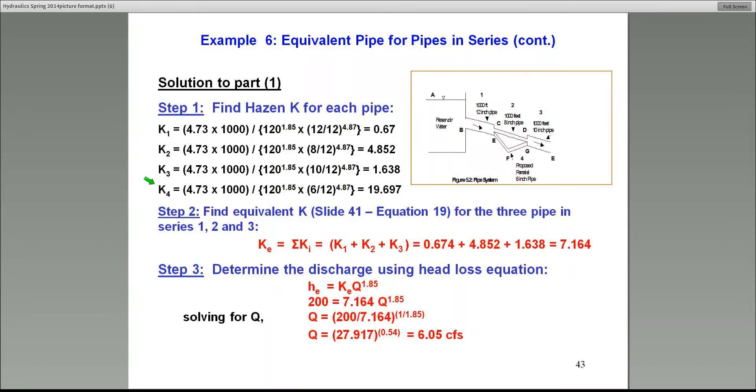For pipes 1, 2, and 3, they're all in series. So the equivalent pipe is the sum of all the Ks: K1, K2, and K3. It gives me an equivalent K of 7.164.